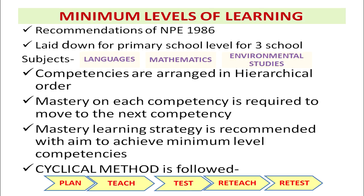One related concept is Minimum Levels of Learning, also called MLL. It was recommended by NPE 1986 — the National Policy on Education 1986. It was laid down for primary school level for three subjects: languages, mathematics, and environmental studies. Competencies are arranged in hierarchical order, and mastery of each competency is required to move to the next. If a student does not master the first competency, they cannot move to the next. Mastery learning strategy is recommended with the aim to achieve minimum level competencies.